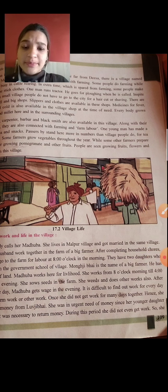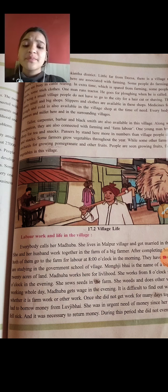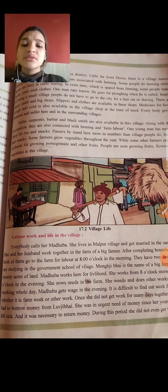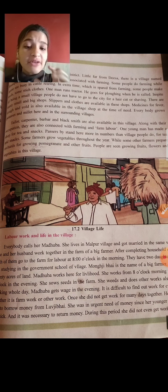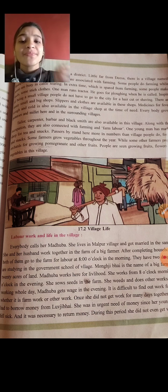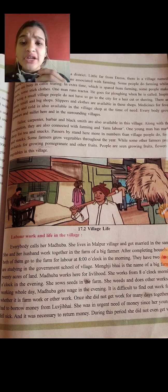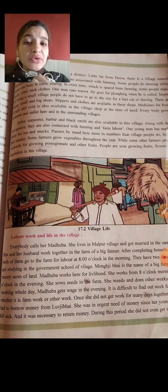They have two daughters who are studying in the government school of the village. Moongji Bhai is the name of the big farmer on whose land they work. He has 20 acres of land, making him a big farmer. Maduba and her husband both work there for their livelihood — since they don't have their own farm, they do labor work to earn and run their basic life.